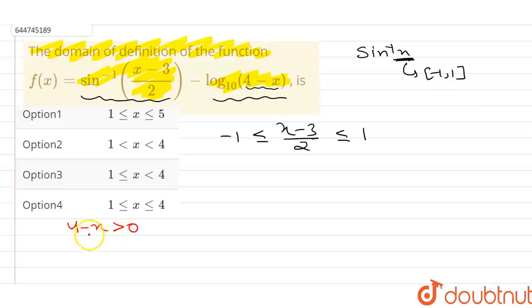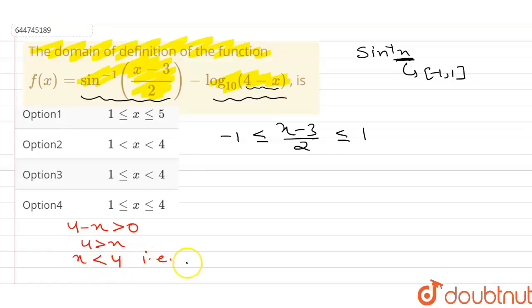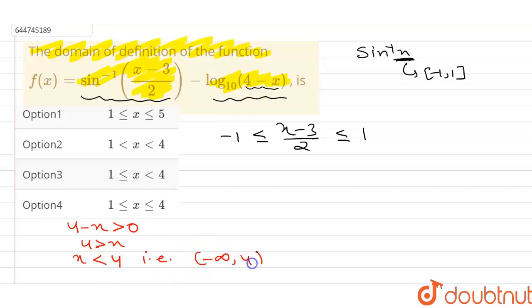From the log condition, 4 is greater than x, so x is less than 4. In interval form, this can be written as minus infinity to 4, i.e., (-∞, 4).